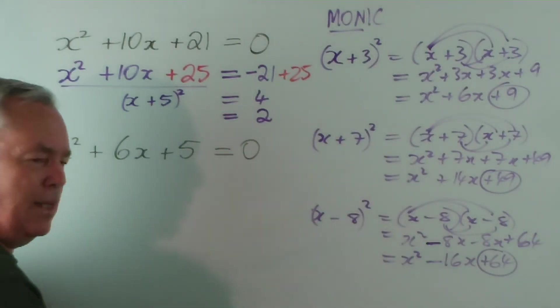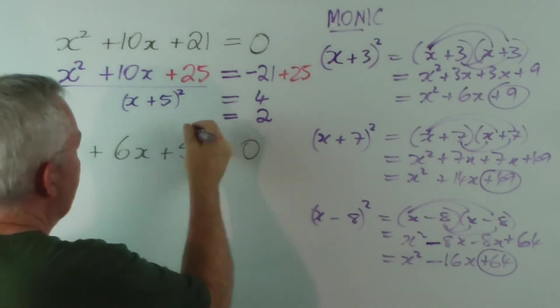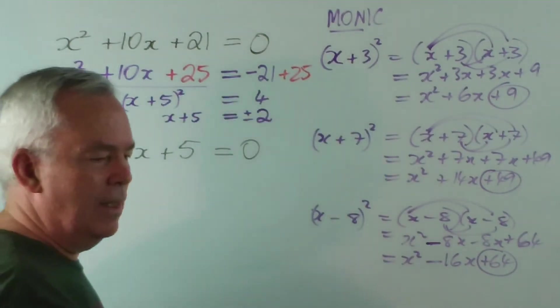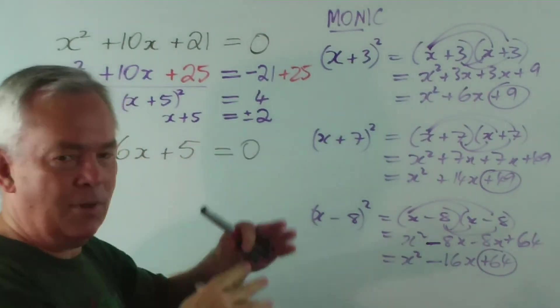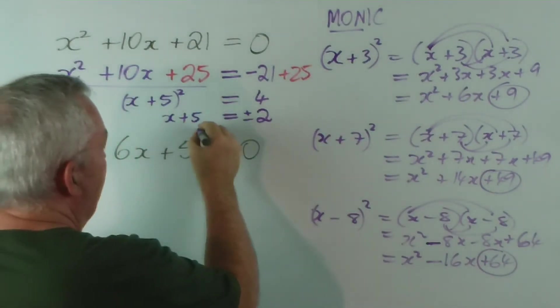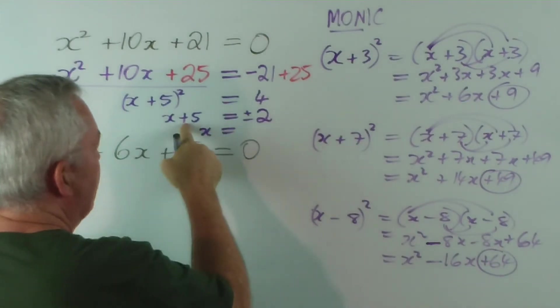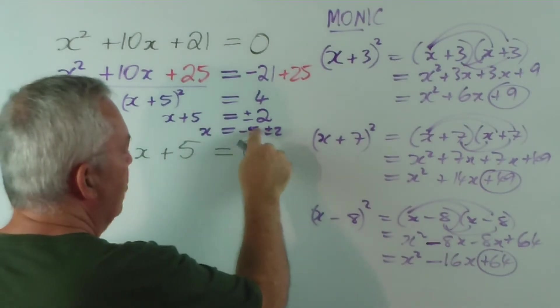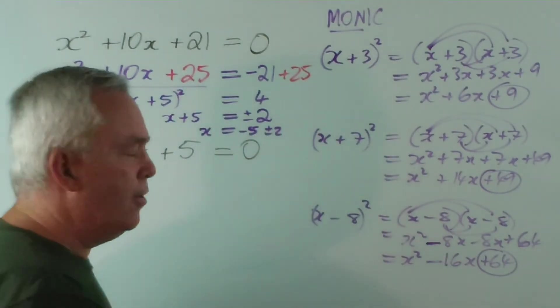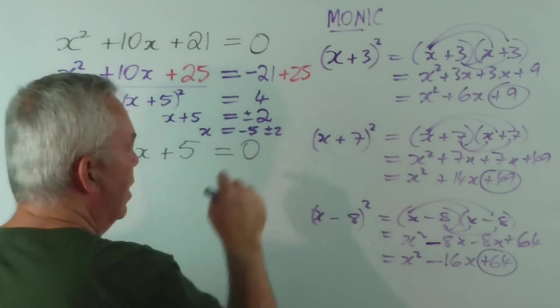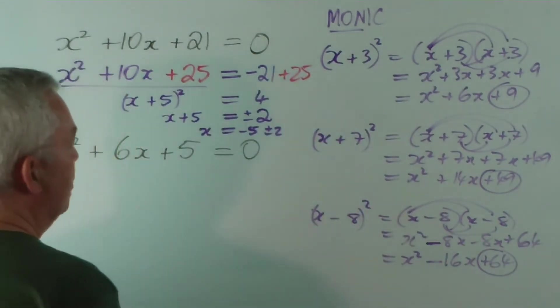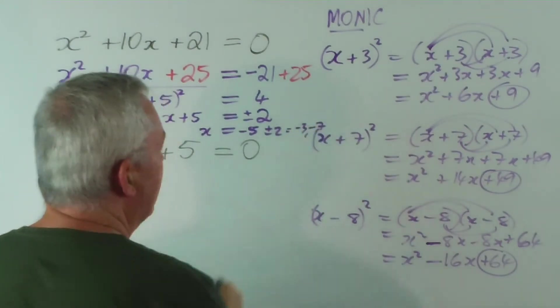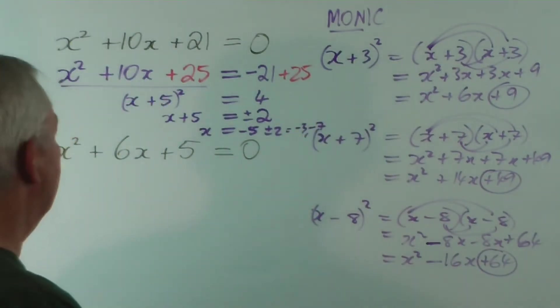But we're going to do it the way it's often done in schools, and that is we take the square root and we get x+5 is plus or minus 2. This is what we would get after a couple of lines of work if we did it properly. Subtract 5 from both sides, and you can see that one answer will be negative 5 plus 2, which would be negative 3. The other will be negative 5 minus 2, which would be negative 7. So here we go - negative 3, negative 7. And those are the two answers, or the two roots, or zeros.